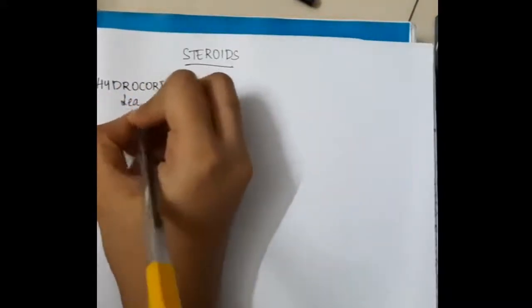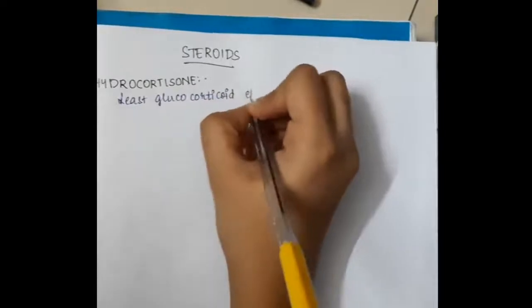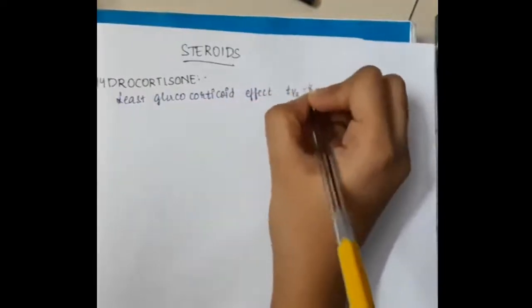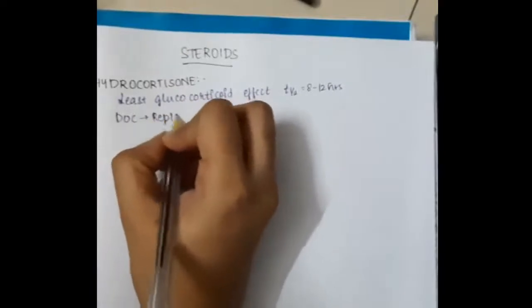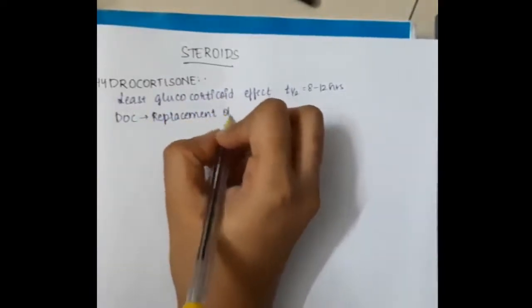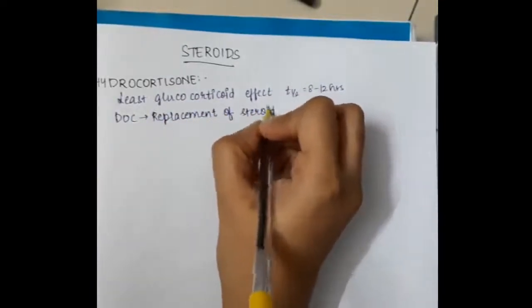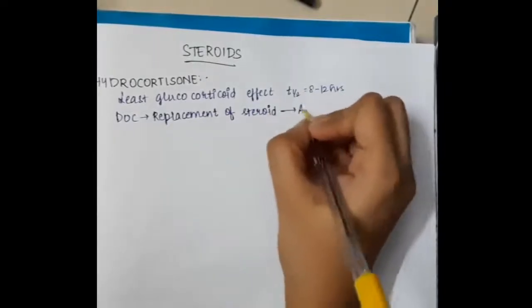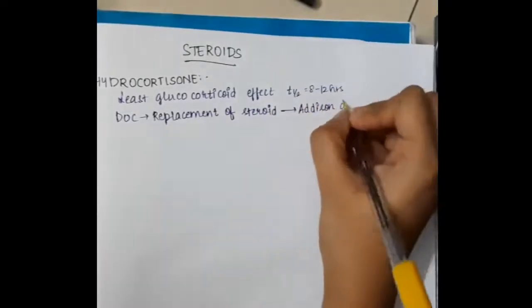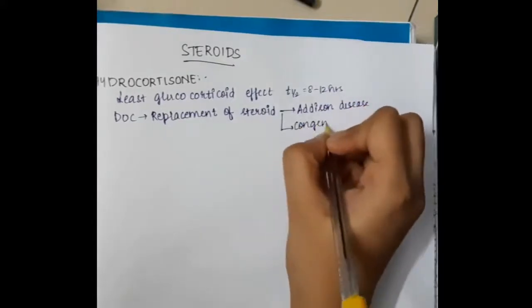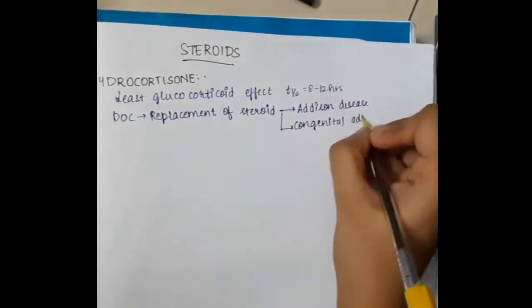Let us learn some important points about steroids. First, we have hydrocortisone. Hydrocortisone has the least glucocorticoid effect, a half-life of 8 to 12 hours, and it is the drug of choice for replacement of steroids in Addison's disease or congenital adrenal hyperplasia.